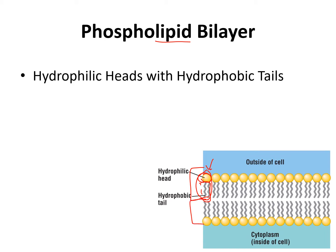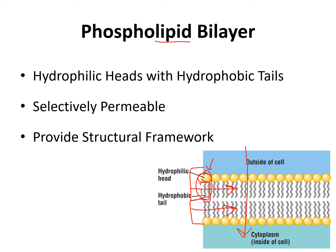This is the second part of the bilayer. Bi meaning two — so one layer of phospholipids here and the second layer of phospholipids there. This is the structure that is selectively permeable. Only small molecules and nonpolar molecules can pass directly through this phospholipid bilayer, which provides the main structural framework for the cell membrane.